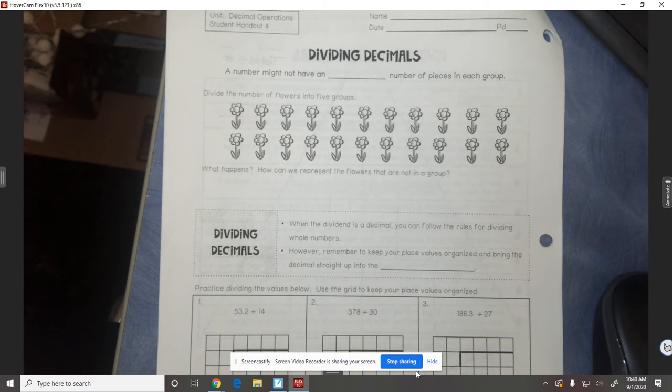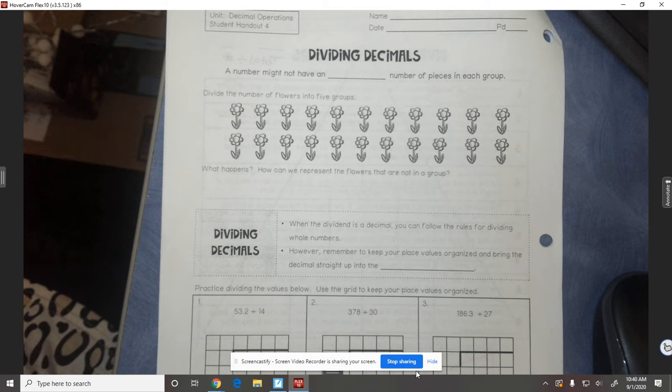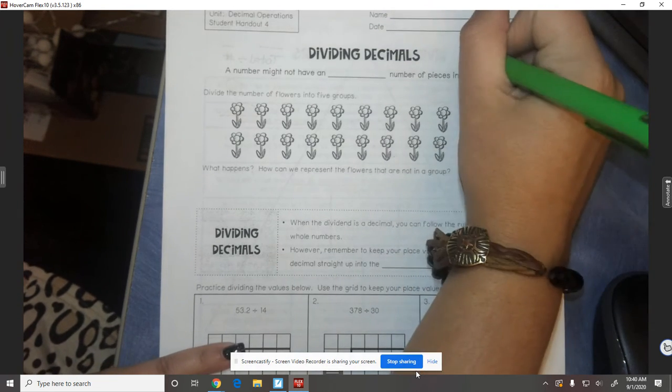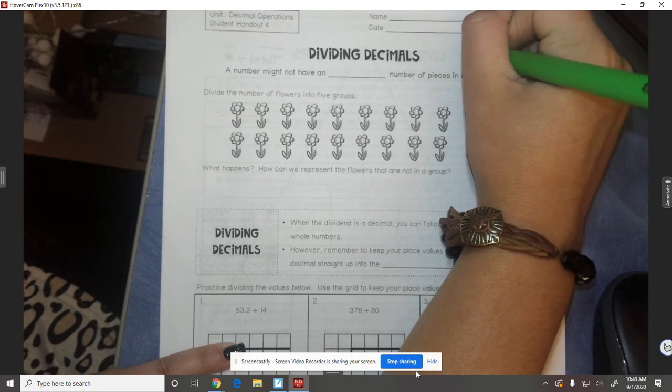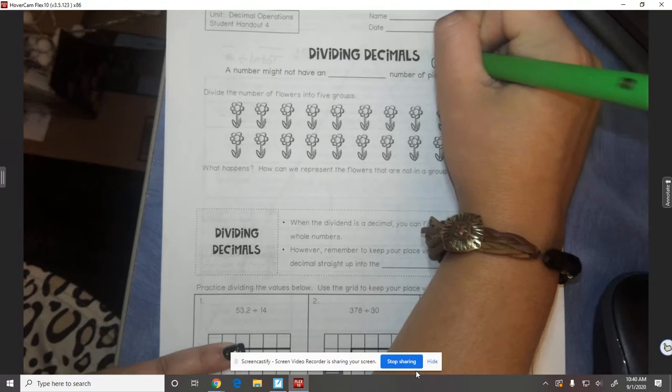Alright, today's lesson tacks on to yesterday's lesson. Yesterday we just divided using whole numbers. Today we're going to be talking about what happens when there's a decimal in the dividend. Remember the dividend is the number under the house. So we have the dividend and we have the divisor.